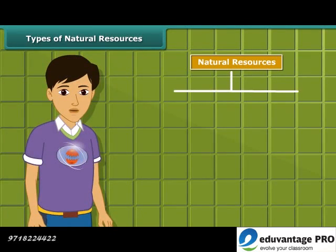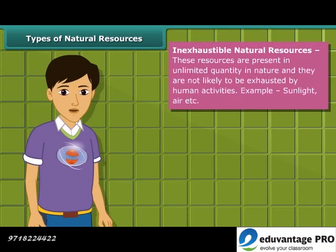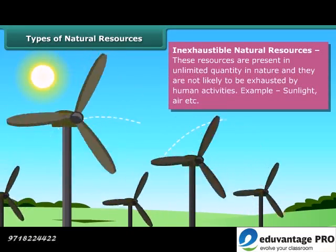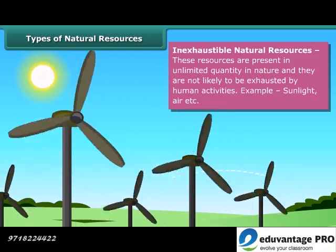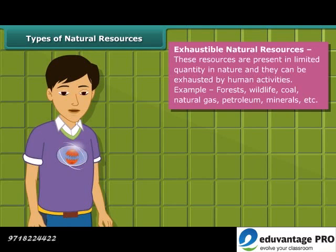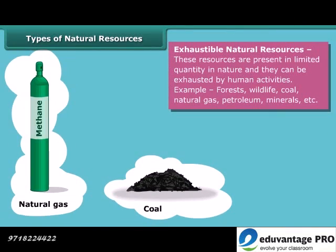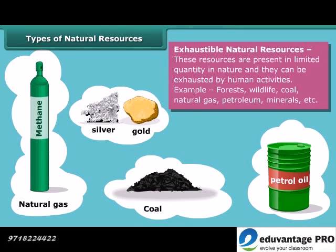Natural resources can be broadly classified into two categories: inexhaustible natural resources and exhaustible resources. Inexhaustible natural resources are present in abundance and it is unlikely they will be exhausted by any human activity — sunlight and air are examples. The amount of exhaustible resources is limited and they can be exhausted by human activities. Forests, wildlife, coal, natural gas, petroleum, and minerals are examples of these resources.